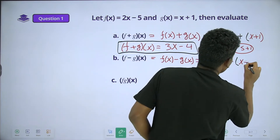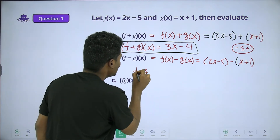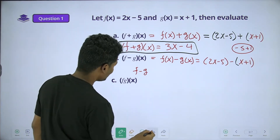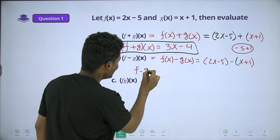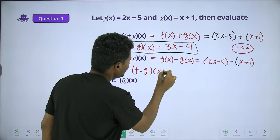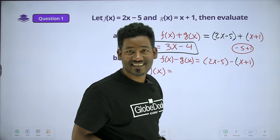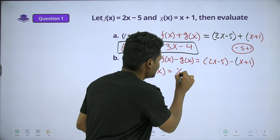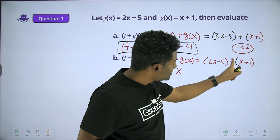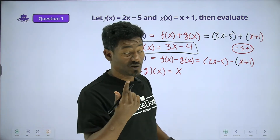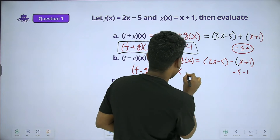Now for f minus g of x. We have 2x minus x which equals x, and then negative 5 minus 1. So f minus g of x equals x minus 6.